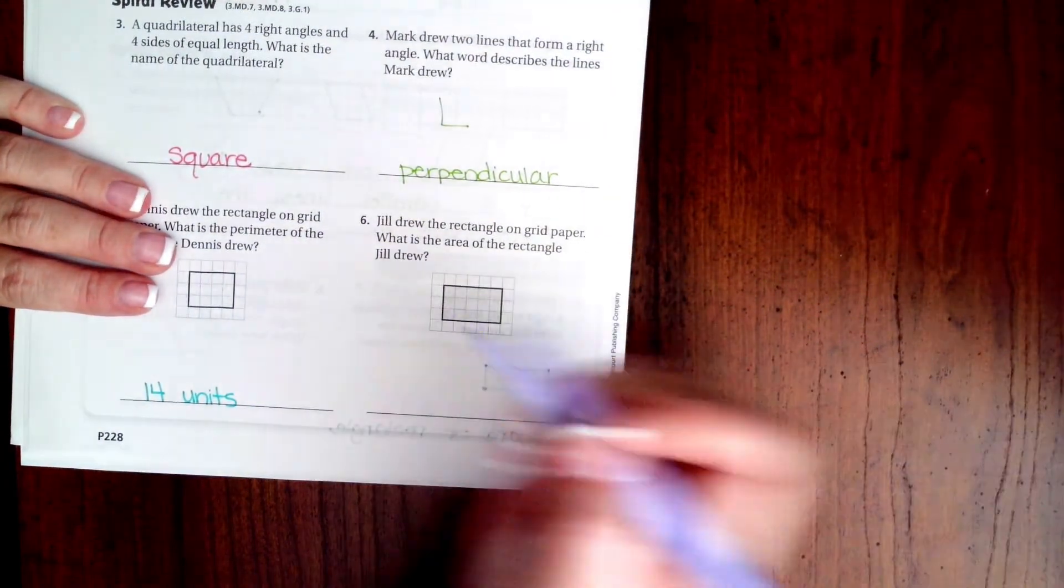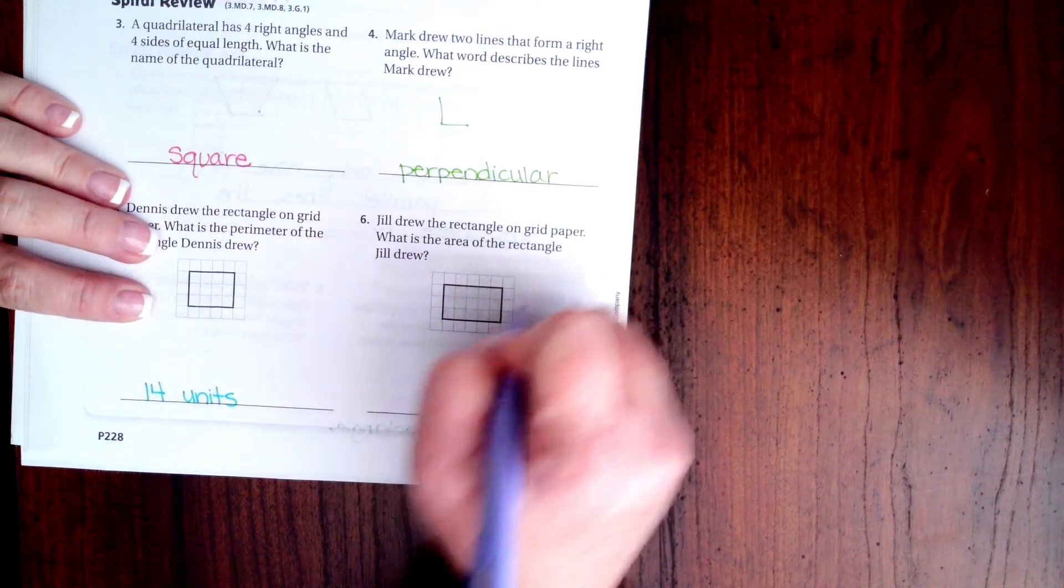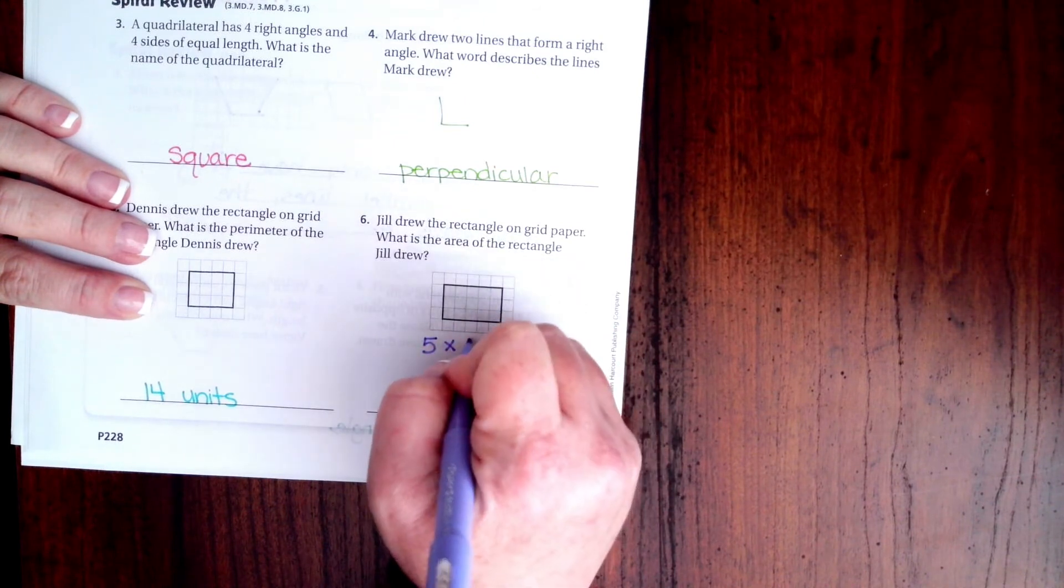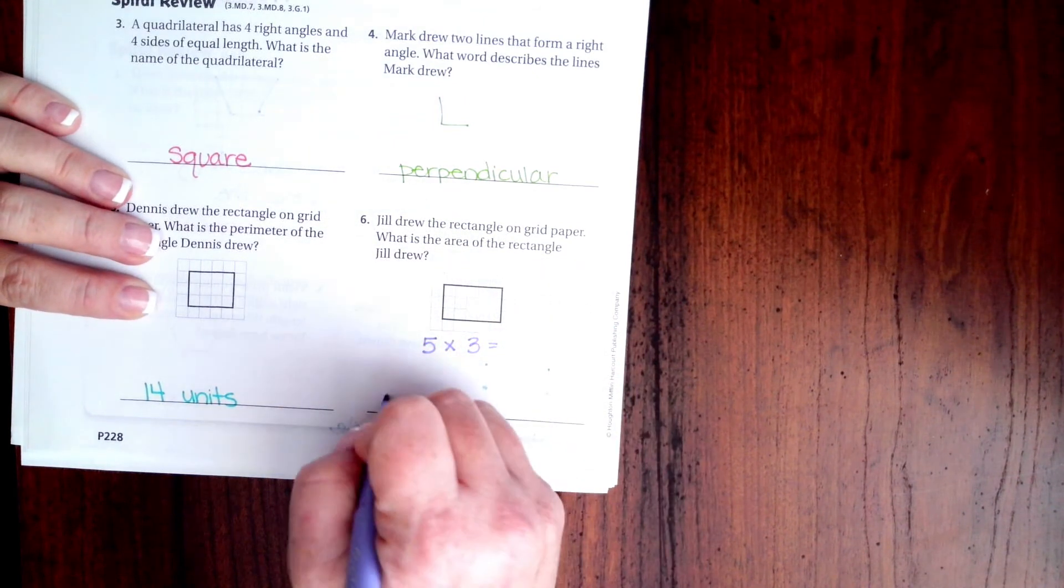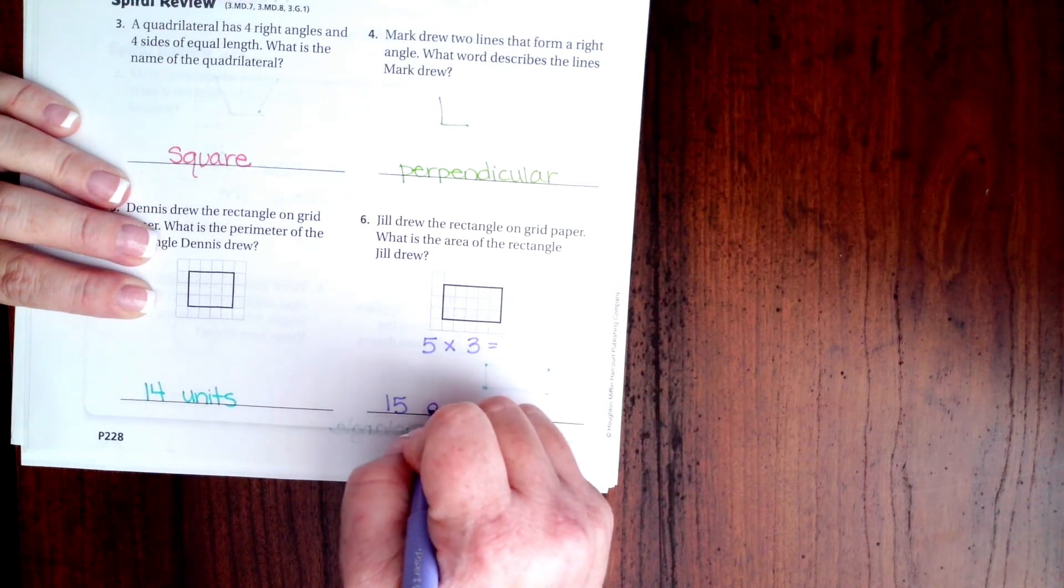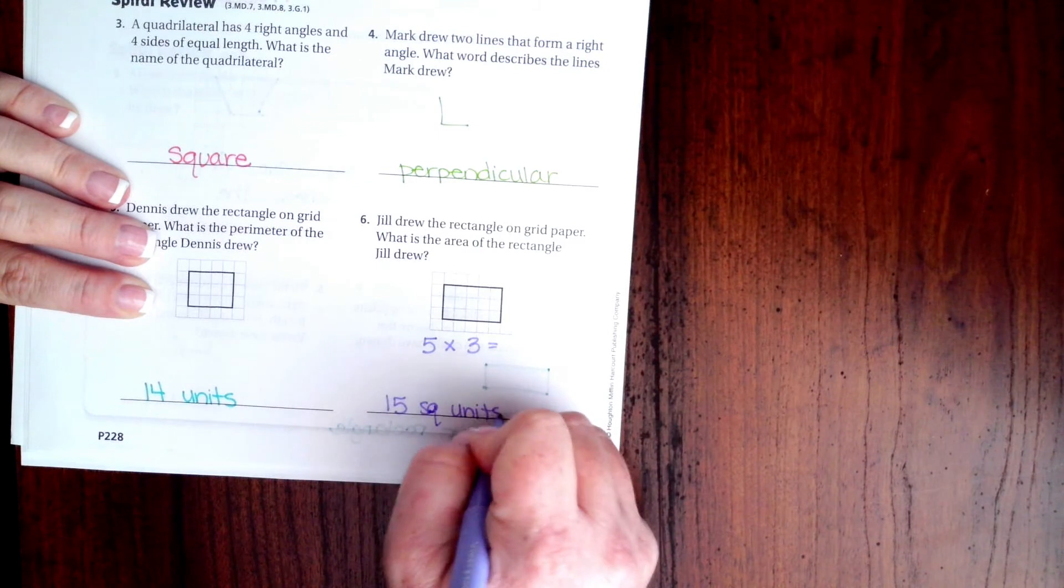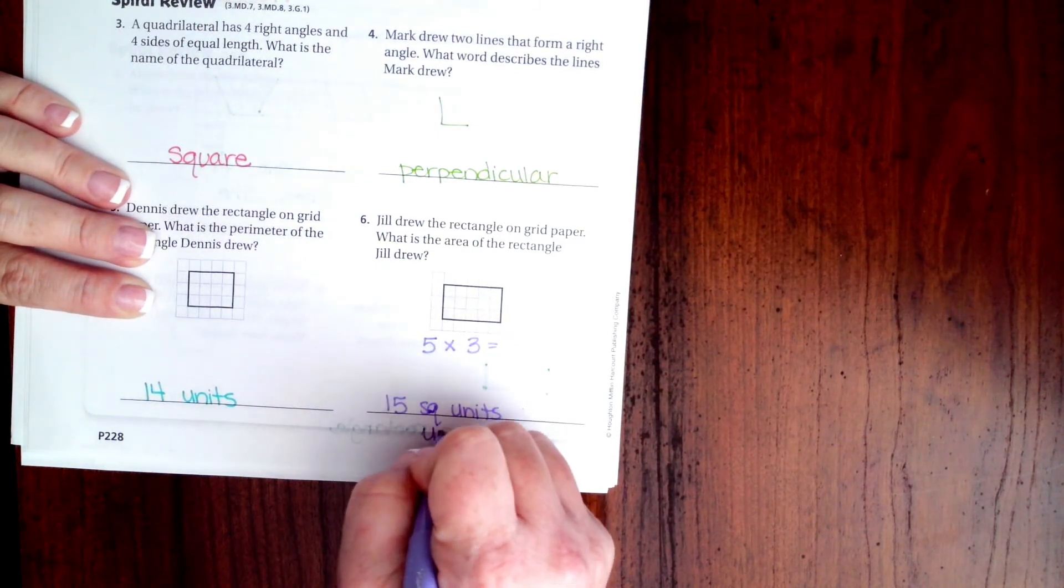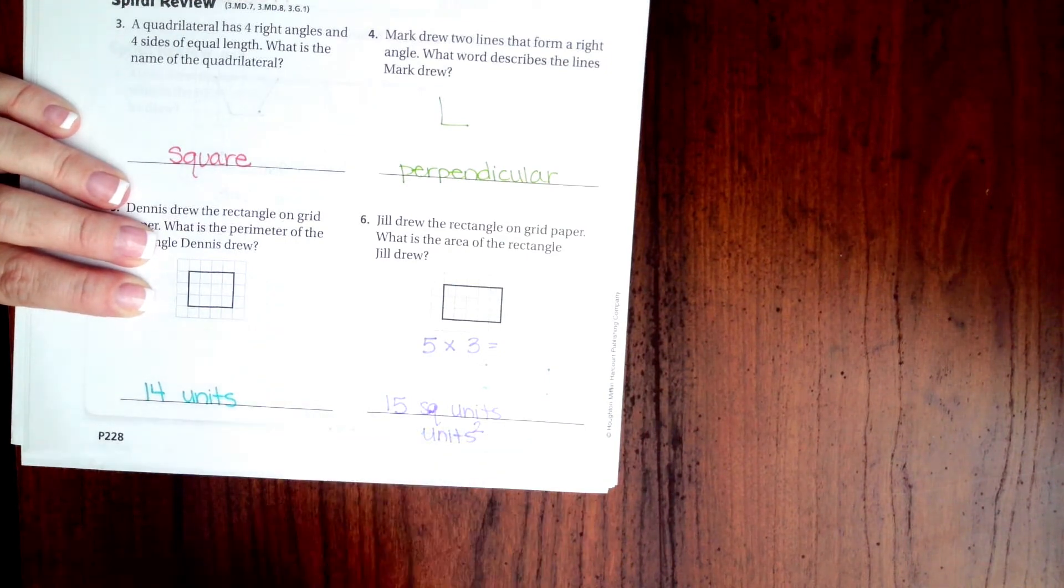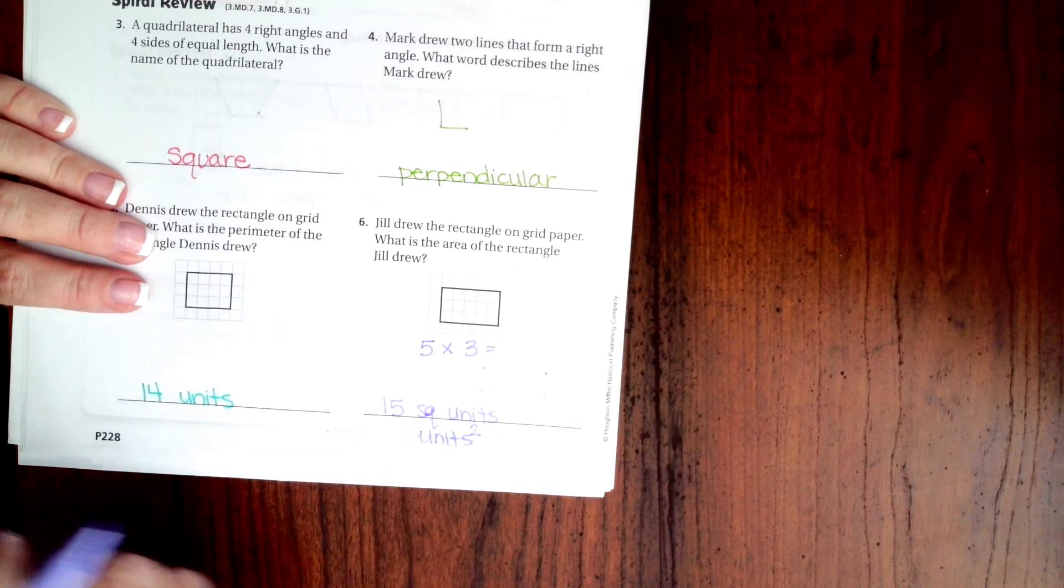So now we have to find the area. Well now 1, 2, 3, 4, 5 times 1, 2, 3. Well 5 times 3 is 15. Now we could put square units. We could put units squared. Or you can write out square and put units. That's your choice as long as it says square units in some fashion.